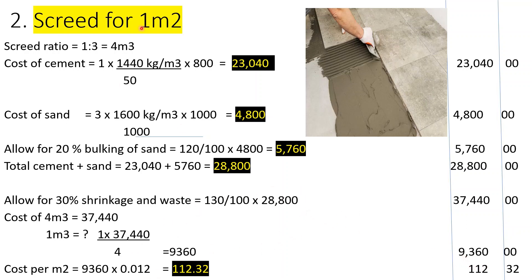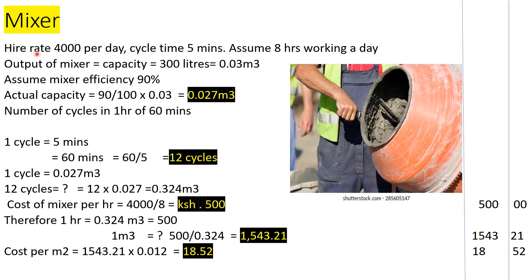Now for the mixer. Hire rate is 4,000 per day; cycle time is 5 minutes; we assume 8 hours per day. Output capacity is 300 litres = 0.3 m³; efficiency assumed at 90%, giving an actual capacity of 0.27 m³ per cycle. Number of cycles per hour: 60 ÷ 5 = 12 cycles per hour.